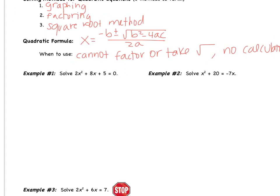Looking at example number 1. You cannot take a square root here because you have both an x squared and an x. Let's see if this factors. If I multiply 2 and 5, I get 10 — two numbers that multiply to 10 and add to be 8. As you can probably guess, there are not two of those numbers. So this is not going to factor. Our only option is the quadratic formula.